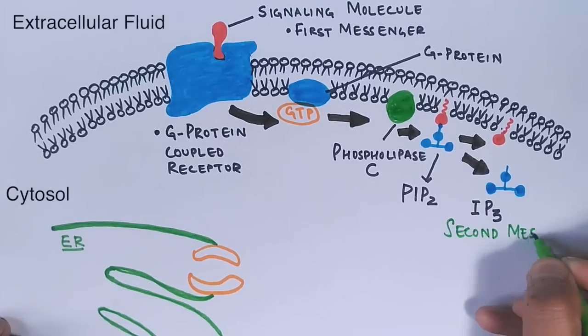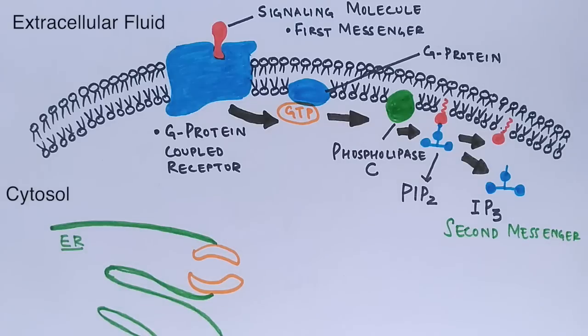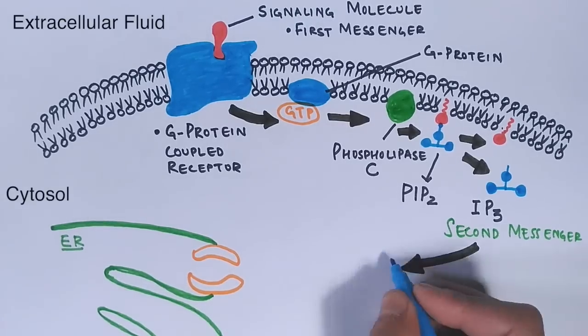DAG remains within the plasma membrane. It also acts as a second messenger in other pathways, and IP3 is released here which acts as a second messenger in calcium pathway.